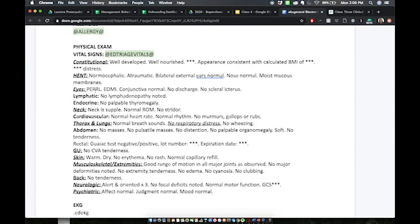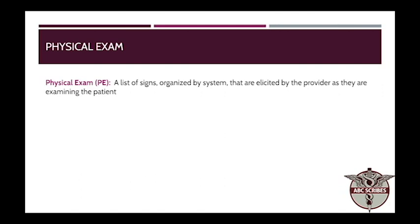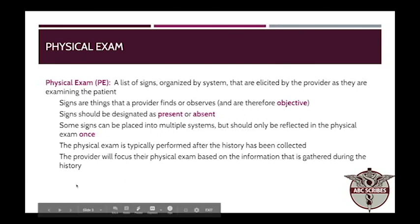The one exception to this are observable elements, and we're going to cover that in detail. The physical exam is our list of signs organized by system that are elicited by the provider as they're examining the patient. You'll see the doctor looking in the patient's eyes, ears, and mouth, and palpating the stomach and various other parts of the body. As you're working with your physician, they're going to state their findings out loud, and you are very much transcribing exactly what is heard. There is one big exception: the observable elements, which we'll cover shortly.